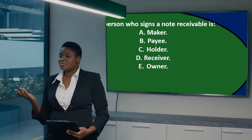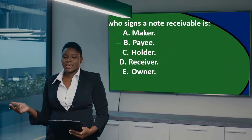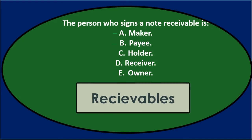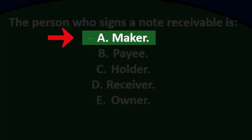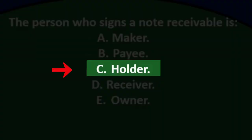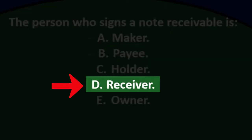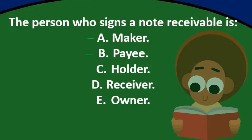In this presentation we will take a look at multiple choice questions related to receivables. First question: the person who signs a note receivable is: A) maker, B) payee, C) holder, D) receiver, E) owner.